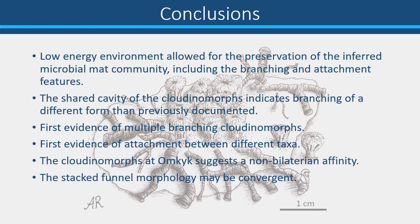The well-preserved microbial mat community has a rigid horizontal structure formed by branching and attaching Cloudinomorphs. It is due to the low energy and possibly lagoonal setting at Omkik which has allowed for the preservation of these fine and delicate structures. The polytomous and external budding form of branching presented from this study has not been seen previously in Cloudinomorphs, and this is also the first case of attachment between Cloudinomorphs and Namacolathus. The evidence of multiple branching Cloudinomorphs suggests a non-bilaterian affinity, which, along with other recent findings from Nevada, suggests that Cloudinomorph morphology is convergent and Cloudinomorphs could represent a group of diverse taxa.